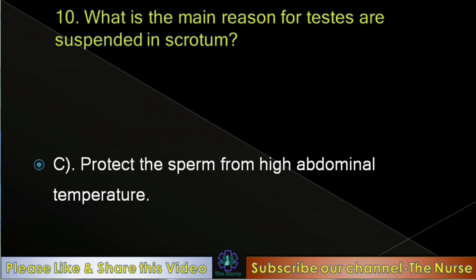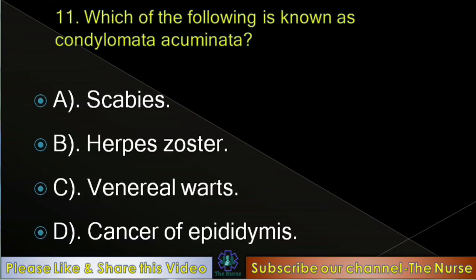Next question: Which of the following is known as condylomata acuminata? Options: Scabies, herpes zoster, venereal warts, cancer of epididymis. Correct answer: Venereal warts.